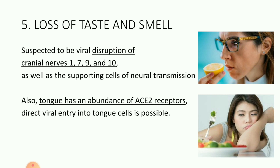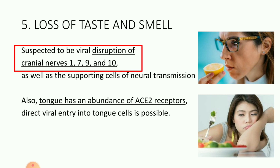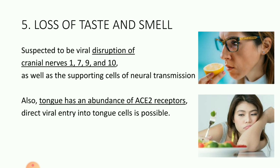Coming on to next — loss of taste and smell. For the loss of smell, it is suspected to be the viral disruption of cranial nerves number 1, 7, 9 and 10. Because of the disruption of these nerves as well as the supporting cells of neural transmission, the patient suffers from loss of smell or anosmia. Whereas loss of taste occurs because the tongue has an abundance of ACE2 receptors, leading to direct viral entry into the tongue cells which disrupts the taste buds, causing loss of taste or ageusia.